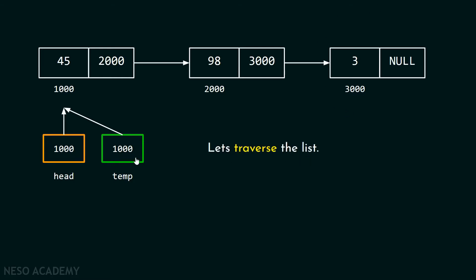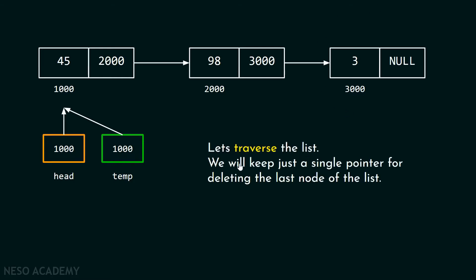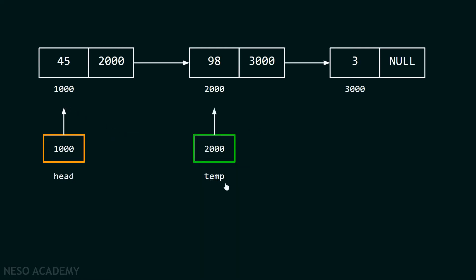Let's traverse the list using this pointer. I will move this pointer towards the right and I will stop at the second last node of the list. The temp pointer will stop at this particular node, which is the second last node of this list.